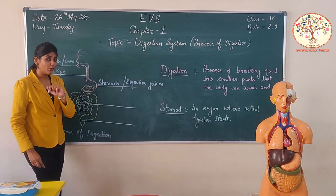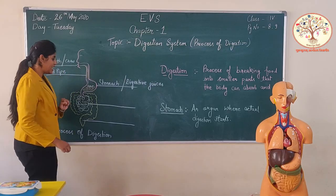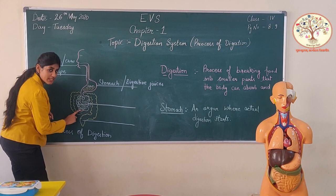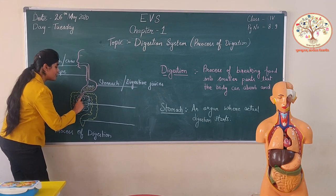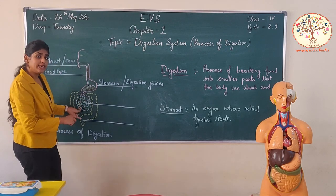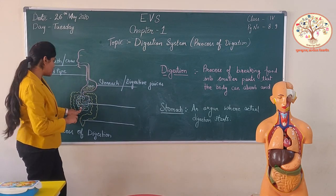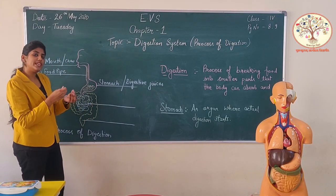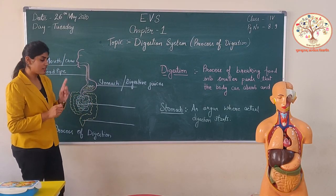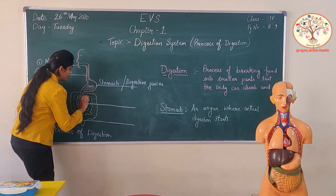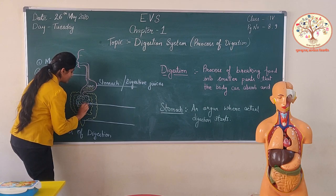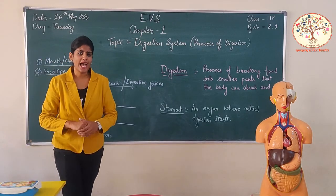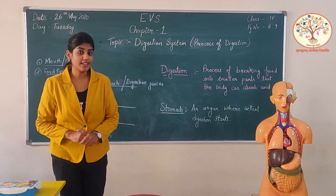Now where will the food pass next? It will pass to the small intestine. The food can pass easily to the small intestine because in the stomach the food is already converted into a paste. Now the food goes into the small intestine, which is very large.